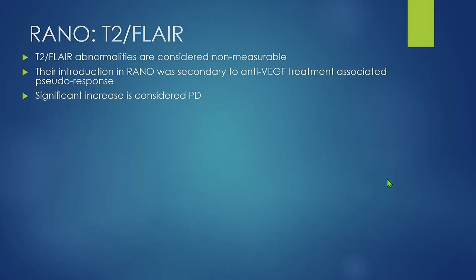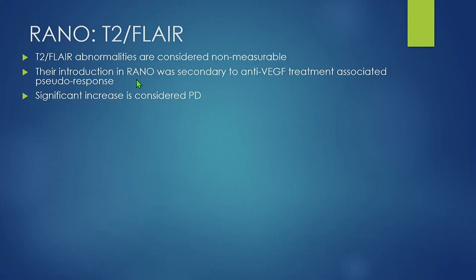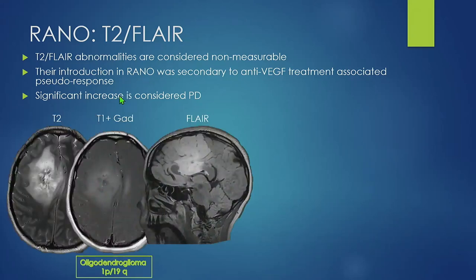When we talk about non-measurable disease, we are talking about T2 FLAIR abnormalities. Their introduction in the RANO criteria was secondary to the new anti-VEGF anti-angiogenic treatment, and is associated with pseudoresponse — we'll talk about it later. To define progression, this increase in T2 FLAIR abnormality has to be significant. Here's an example of an oligodendroglioma with an ill-defined, very hyperintense T2 lesion in the frontal lobe with midline shift. The enhancement of the lesion is more or less ill-defined, and I show the 3D sagittal FLAIR to illustrate how this lesion invades the corpus callosum.